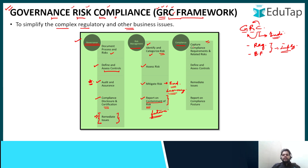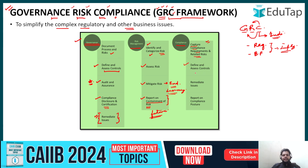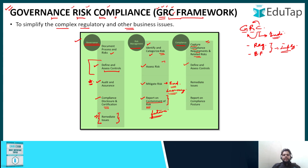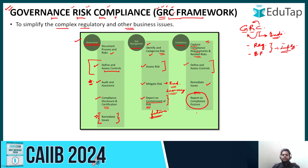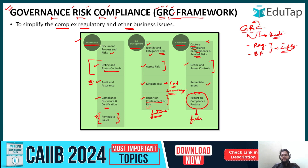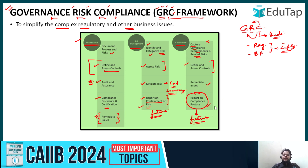Under compliance, it will capture the compliance requirements and related risks. Define and assess the control — this is present in all three verticals: governance, risk management, and compliance. The final remedy taken is again included in compliance, and you report on the compliance posture for future reference. You will notice that some things like reporting appear in both risk management and compliance, and assessing controls appears in both governance and compliance.